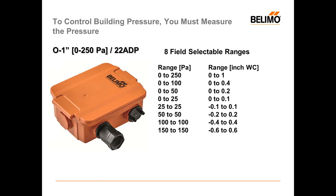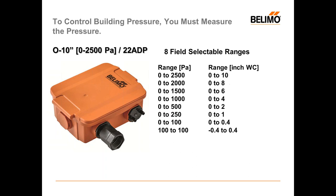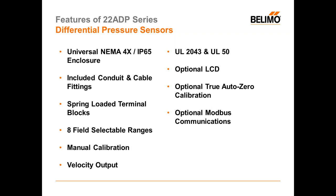You can't manage the building without measuring the pressure. The 22ADP differential pressure transmitter comes in three ranges: zero to one inch with eight field-selectable ranges, from zero to one inch down to negative 0.6 to positive 0.6. The zero to ten version has everything from zero to 10 inches to negative 0.4 to 0.4 as field-selectable ranges. The zero to 28 version covers zero to 28 inches down to zero to four inches of water. All come in NEMA 4 enclosures, so you don't have to worry about which sensor you buy for any installation — all are NEMA 4 rated, 4X rated with IP65.